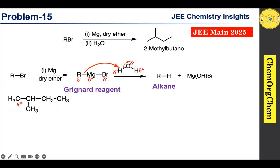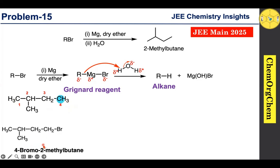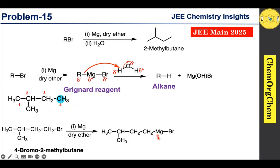The R group in the alkyl bromide must have the same carbon skeleton as 2-methylbutane. We need to figure out where the bromine atom could have been attached. The structure has a four-carbon chain with a methyl group on the second carbon. Numbering the carbons 1 through 4: if carbon 4 has the bromine atom, that gives us 4-bromo-2-methylbutane. When this reacts with Mg in dry ether, it forms the Grignard reagent, which then reacts with water to produce 2-methylbutane. This is the first possibility.